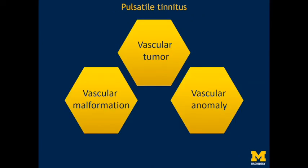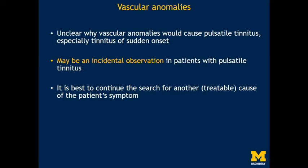The third category is vascular anomalies — those present since birth or that have slowly developed over time. One might ask why a longstanding vascular anomaly would suddenly cause pulsatile tinnitus. The hypothesis is that flow within these anomalies can change over the course of a patient's life. For example, an aberrant carotid artery may have changing flow velocities due to a proximal stenosis. However, when you discover a vascular anomaly in a patient with pulsatile tinnitus, remember it might be incidental — continue searching for another treatable cause before concluding.